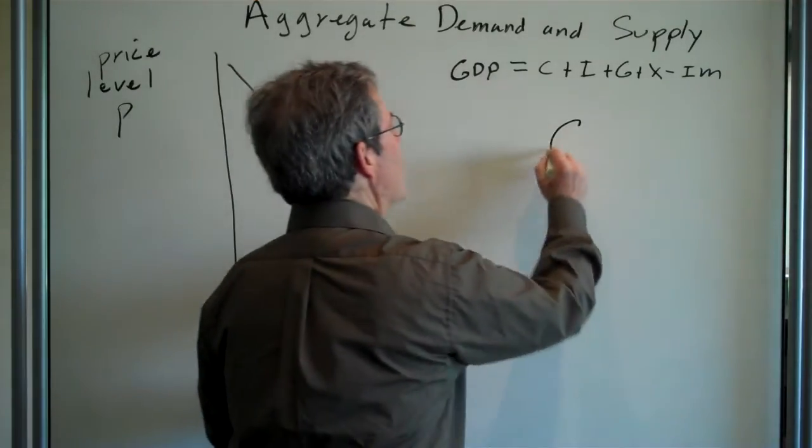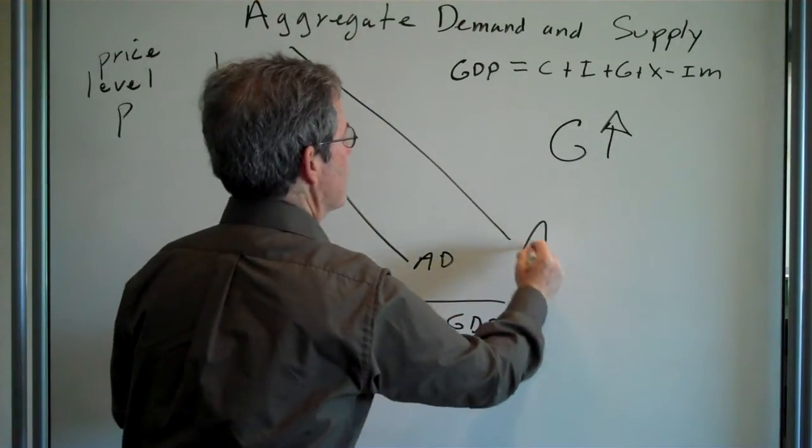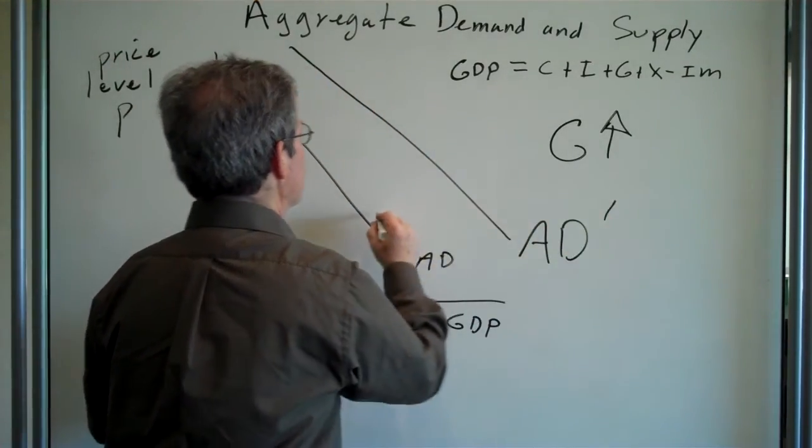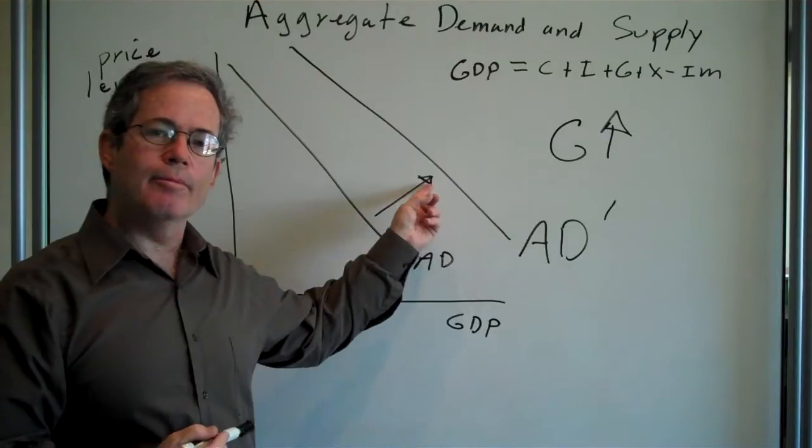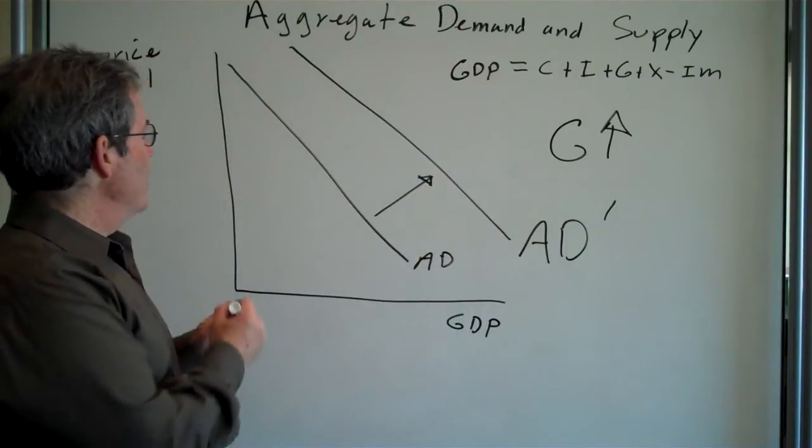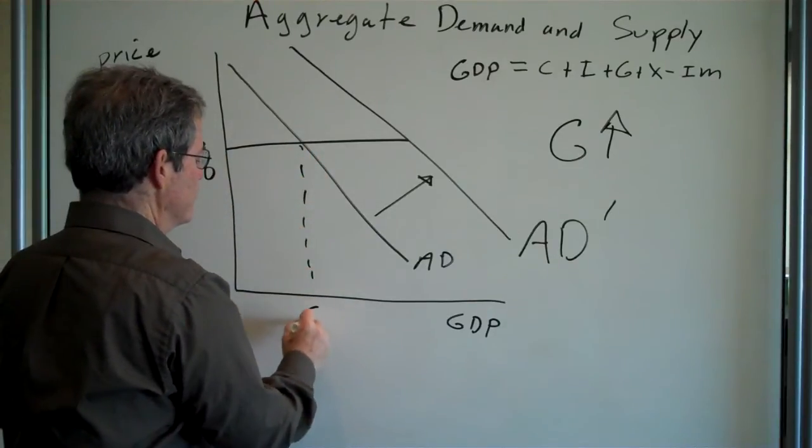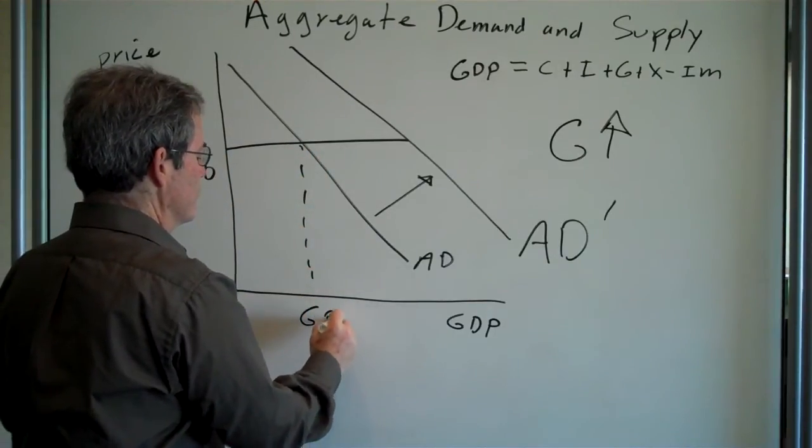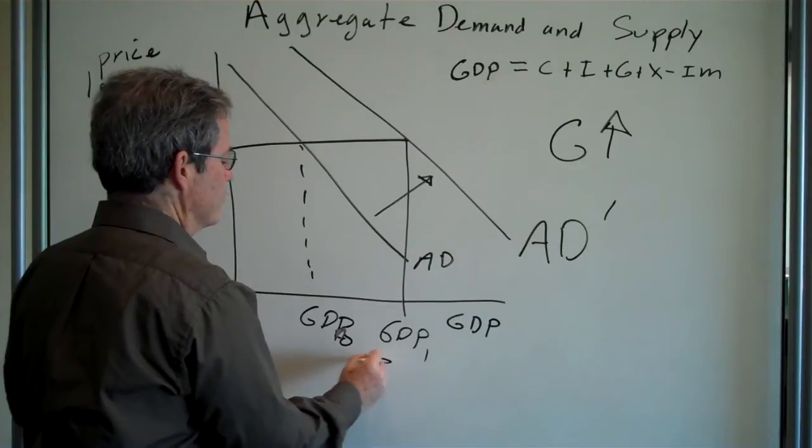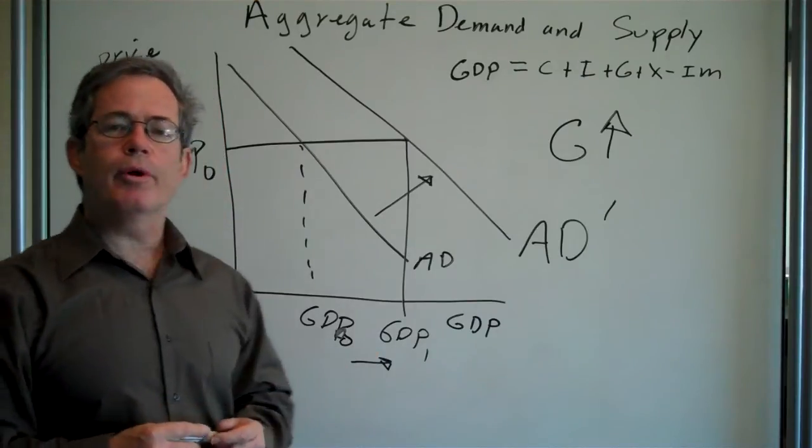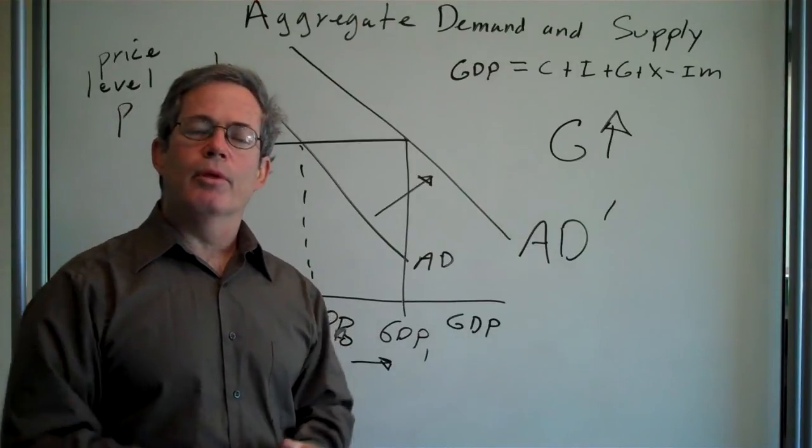So when government expenditure goes up, we'll have a shift outward in the aggregate demand line. So at any price level then, say P0, then demand for output will go up from GDP0 to GDP1, and the economy will expand.